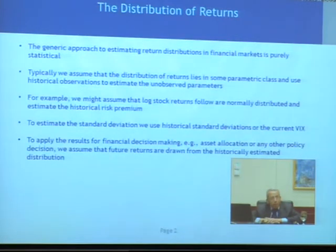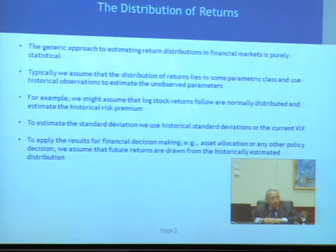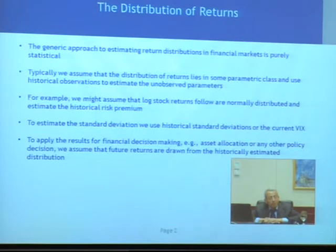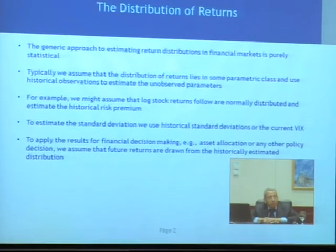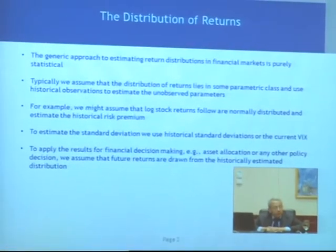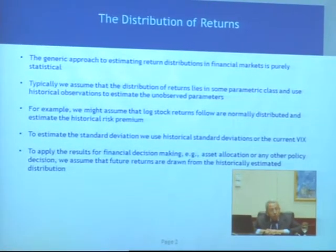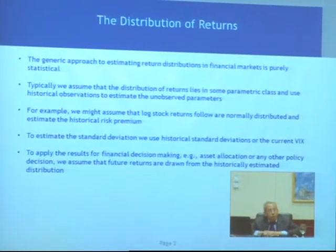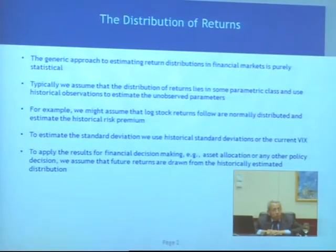I want to focus on the equity markets. Generically, the approach we take to figuring out what the markets are saying about the future is to look at the history of these markets. So typically, if we're trying to figure out what the risk premium is, what the expected return on stocks is going to be, we look historically at what the expected return has been. Similarly, if we're trying to figure out how risky stocks will be in the future, we look at the historical risk or the historical standard deviation. This is the typical thing we do.